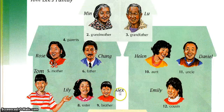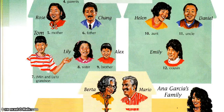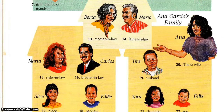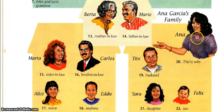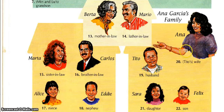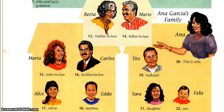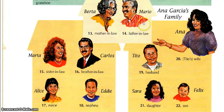Emily is his cousin. Good job guys! Let's check out more family vocabulary. She is Anna Garcia and this is her family. Tito is her husband, Sarah is her daughter, Felix is her son, Mario is her father-in-law, and Berta is her mother-in-law.